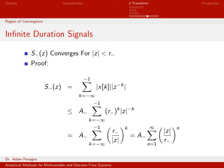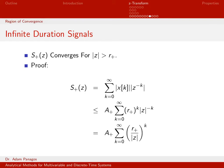Now let's do essentially the same thing for the positive part. We can prove that S plus converges for all Z whose magnitude is greater than R plus. Starting from the definition of S plus, from line 1 to line 2 I use the assumption that I found A plus and R plus to bound X of K — replacing X of K with a plus times R plus to the K, a larger signal.